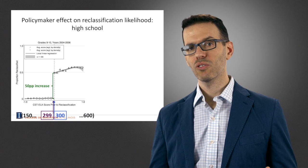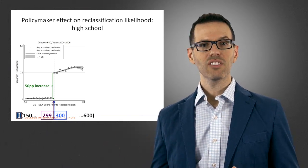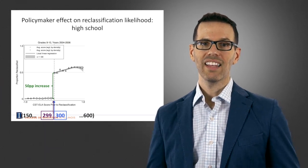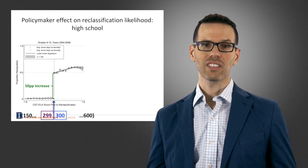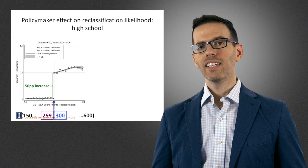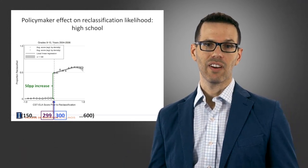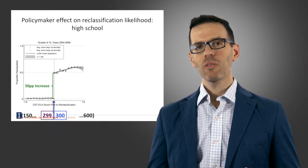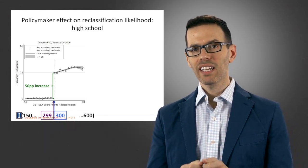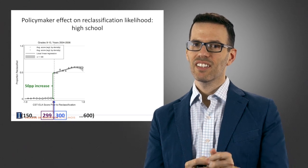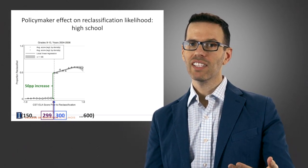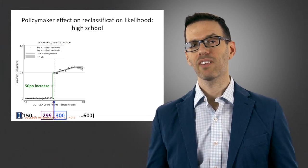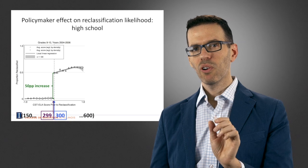This has dramatic consequences for students: the teachers who instruct them, the peers alongside them, the academic content they receive, and even the courses they are eligible to take. With this design, we compare students who are virtually identical — one gets that extra point and has a greater likelihood of reclassification, the other does not. By isolating this component, we can treat it as essentially a random chance of getting reclassified.